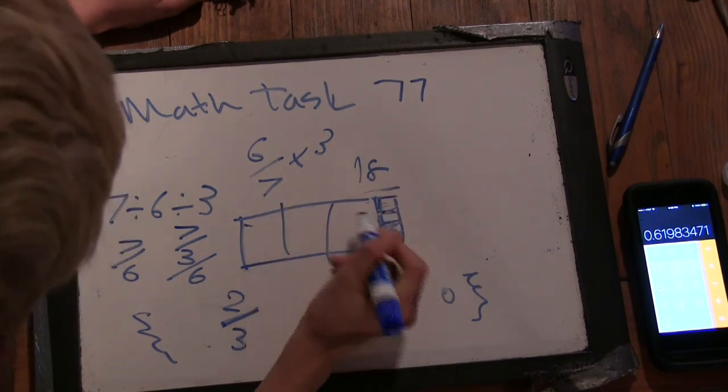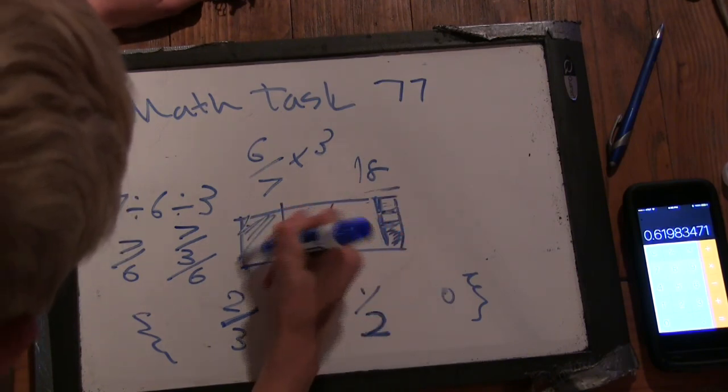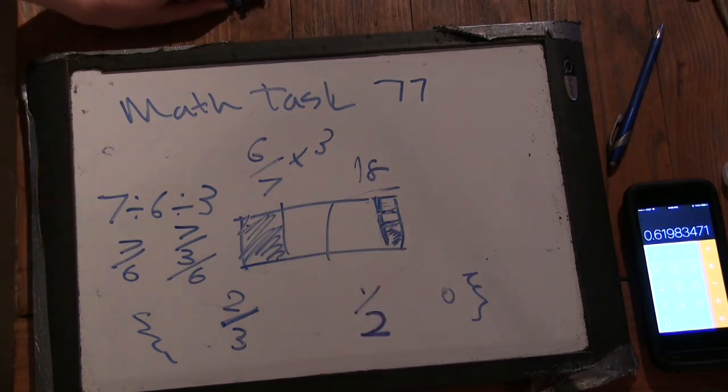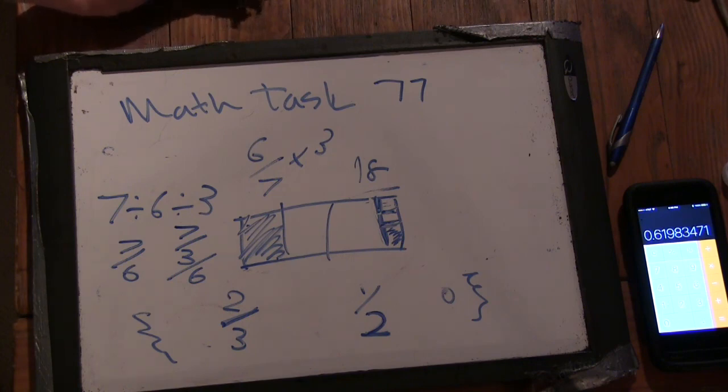And then one of these is going to be a third. So we have a third plus an eighteenth. And a third is 6 eighteenths. So we're going to have 7 eighteenths total. 7 eighteenths total. Yeah.